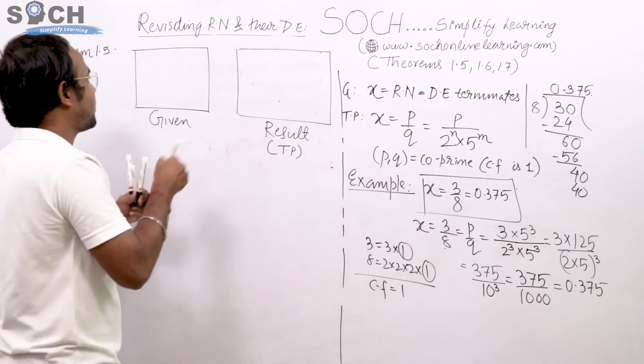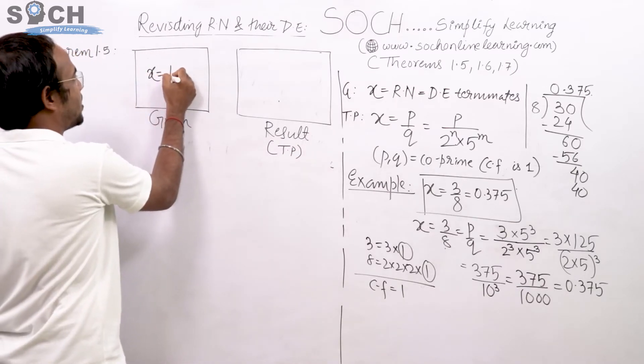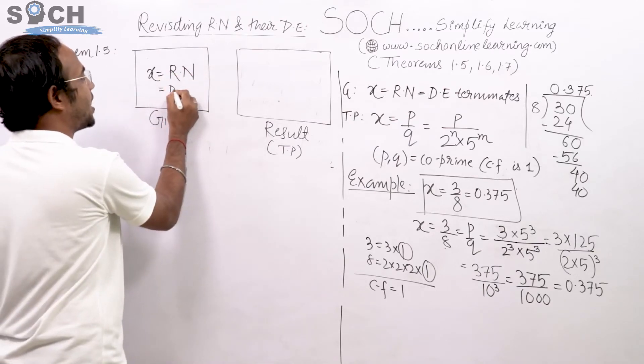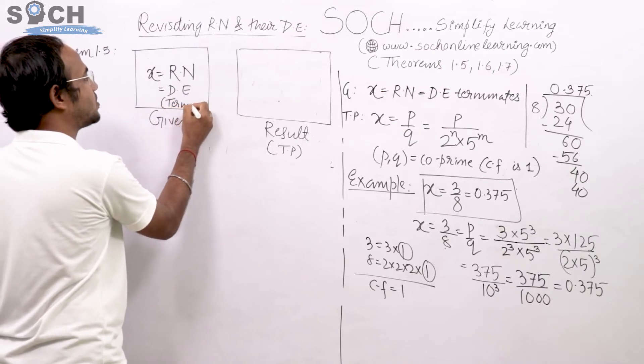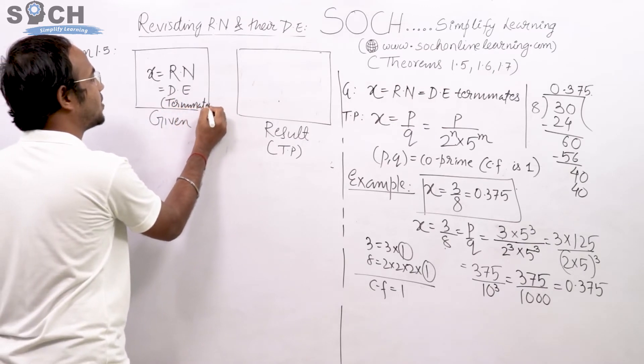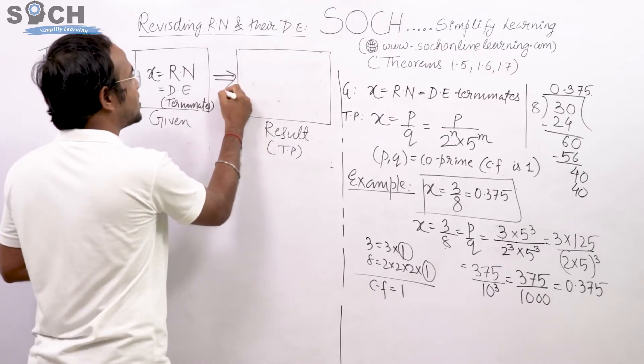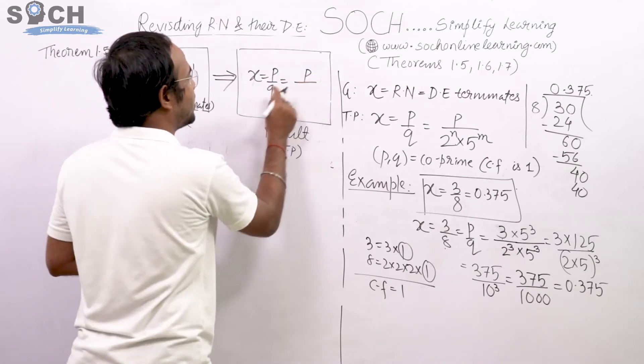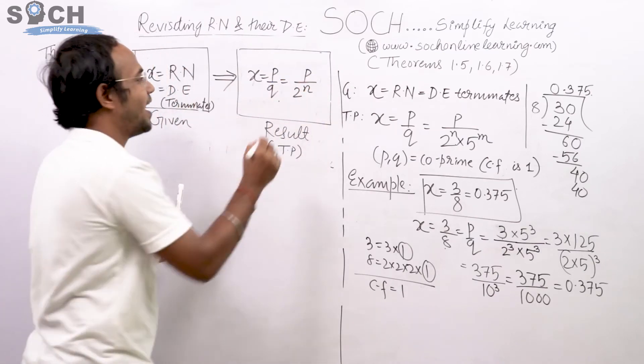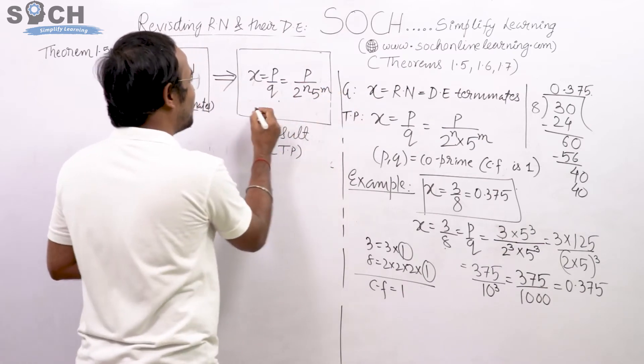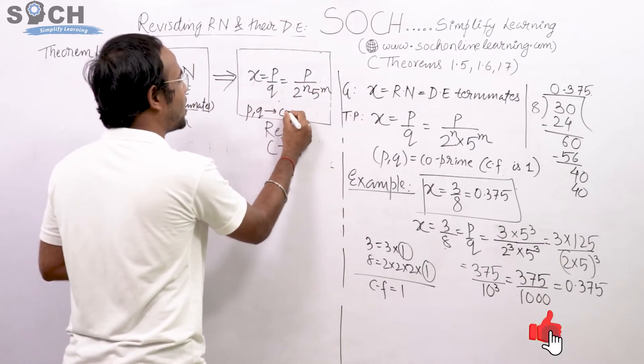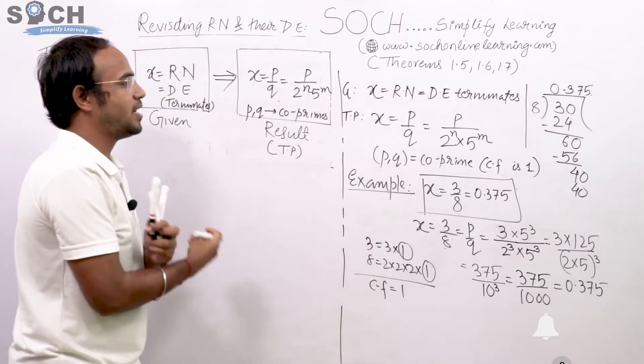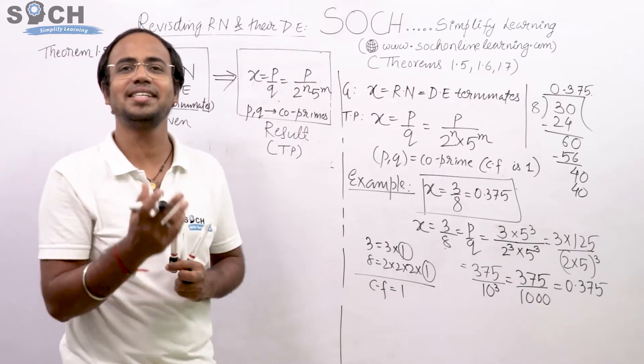What is the given thing? That X is a rational number whose decimal expansion terminates. Therefore this implies then this X can always be thought of as P by Q where the denominator Q can be expressed as 2 raised to N and 5 raised to M, where P and Q are co-primes. And this finishes the whole theorem within no time.